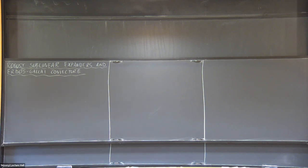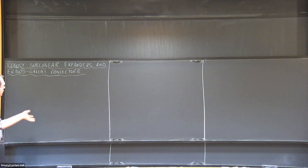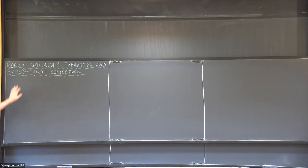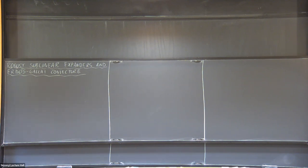By a graph decomposition problem, I mean you have a graph with some set of edges and you partition the set of edges into various graphs — I'm talking about edge decompositions, not vertex decompositions. Vertex decompositions are also very interesting, but this time I focus on the more classical thing where you decompose edges. Erdős-Gallai is actually a cycle decomposition problem.